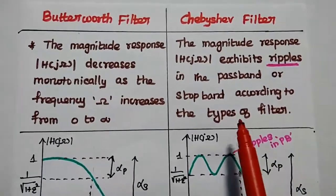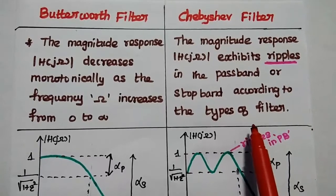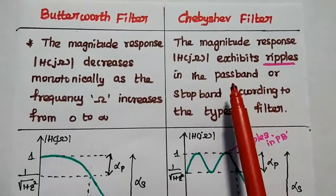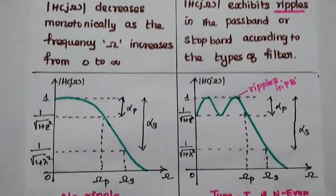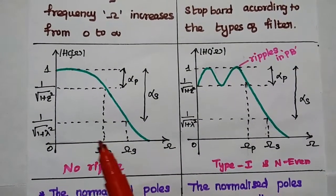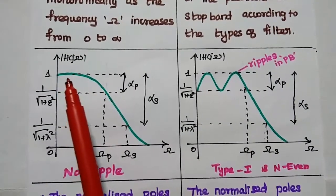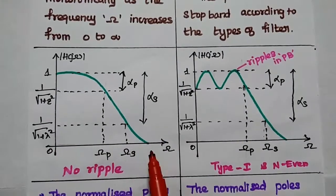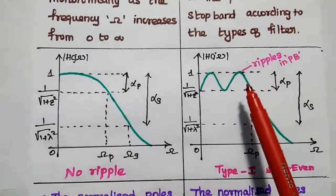In the Chebyshev filter, there are two types of filters available: Type 1 and Type 2. Based on the type, the ripples exhibit either in the passband or stopband. The diagrammatic representation of this magnitude response is given like this. In the Butterworth filter, the magnitude response decreases monotonically, but in the Chebyshev filter, ripples exhibit in the passband.